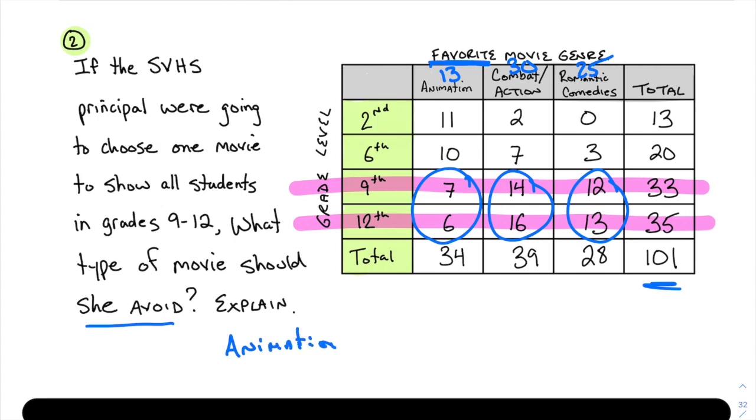So I'd avoid animation because only 13 out of 101 chose animation as their favorite. And that is how to not only fill in but interpret two-way frequency tables.